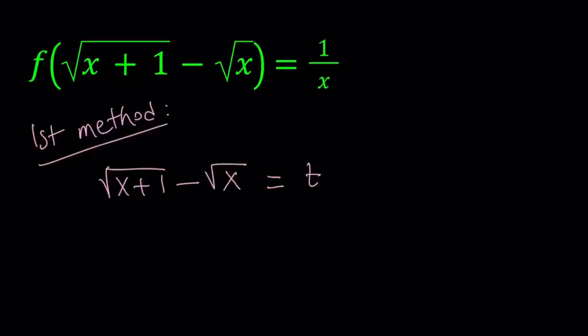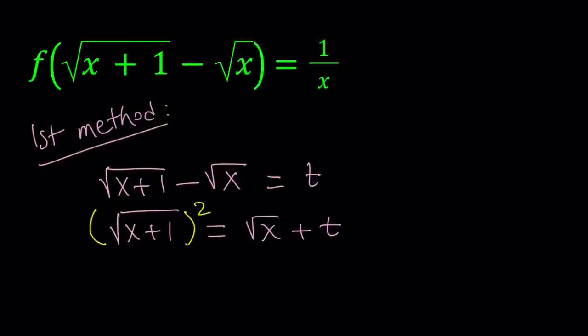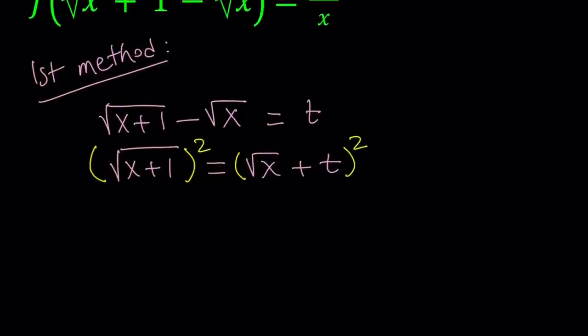Now let's isolate the square root of x plus 1 on the left-hand side. We're going to add square root of x to both sides, and then square both sides. The idea is to separate the radicals first, put them on different sides, and then square to get rid of them. The left-hand side gives us x plus 1. The right-hand side is like (a + b)², which is a² + 2ab + b², giving us x + 2t√x + t².